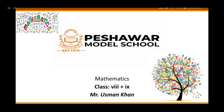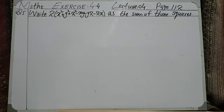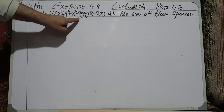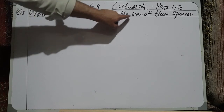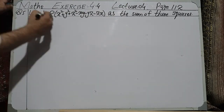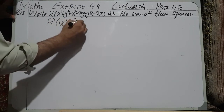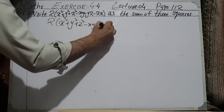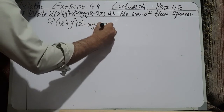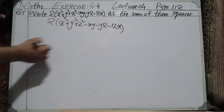Assalamu alaikum, this is Usman Khan. In today's lecture I will explain question number five, lecture number four of exercise 4.4. We need to show that 2(x² + y² + z² - xy - yz - zx) is the sum of three squares.